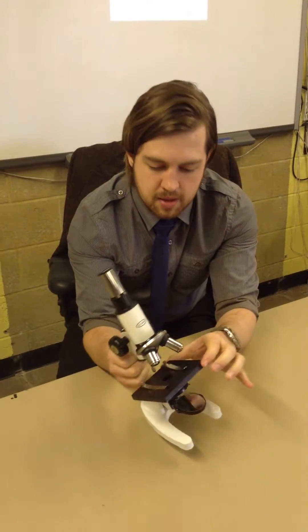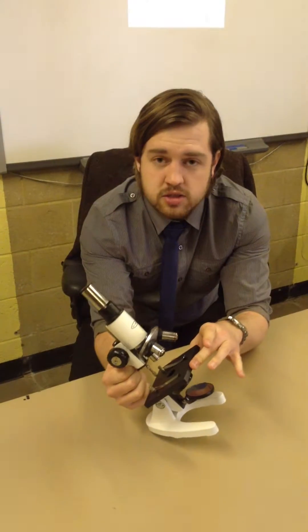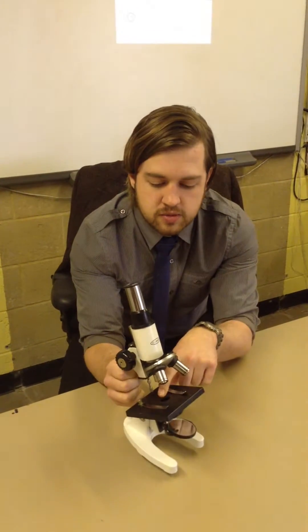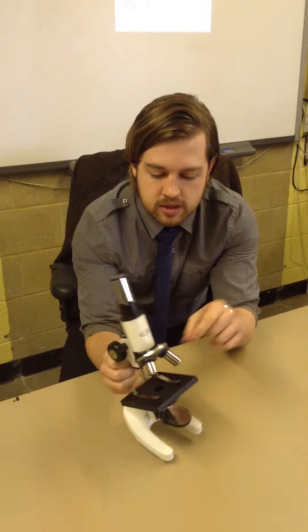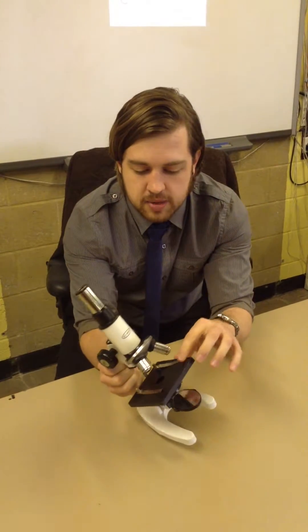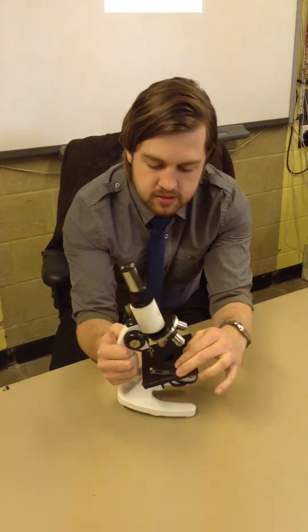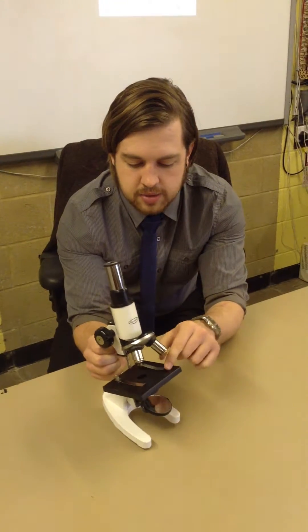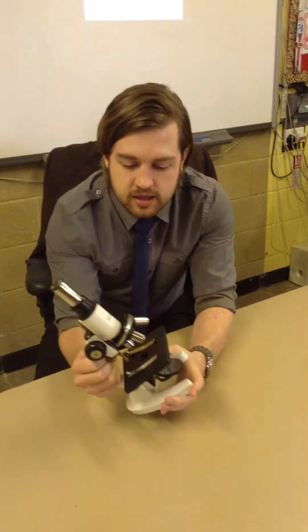We then have this big black square by here. Now, this big black square is what's known as the stage. The stage is where you will put your slide to look at and you will try and get it above the hole in the middle. In order to hold the slide in place, you have these two little pins that can move about and up and down to keep your slide in place.